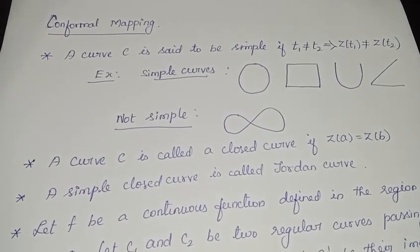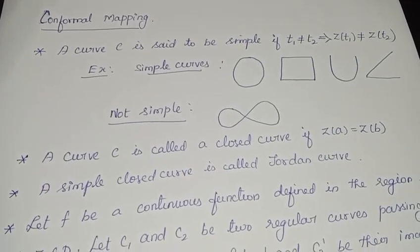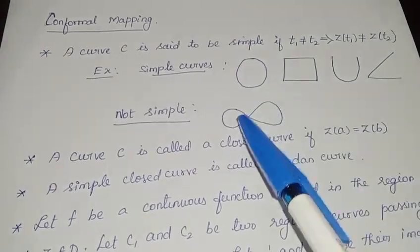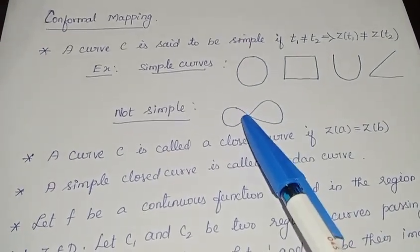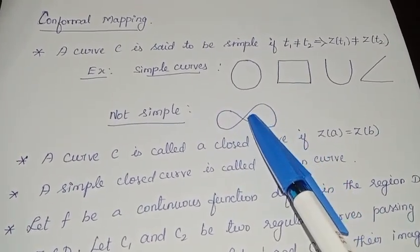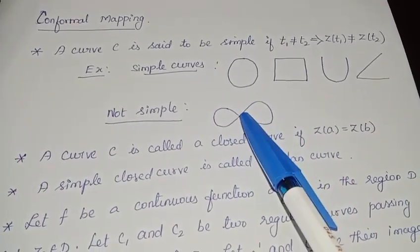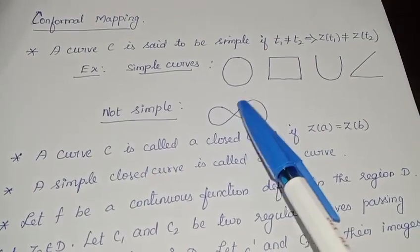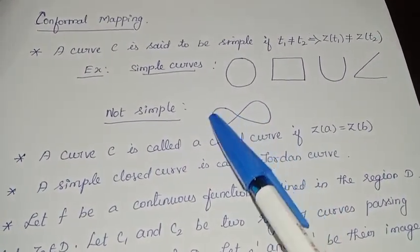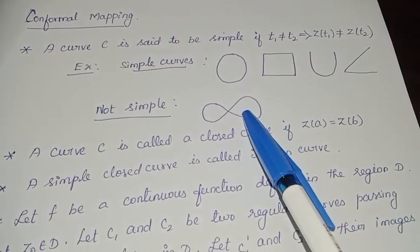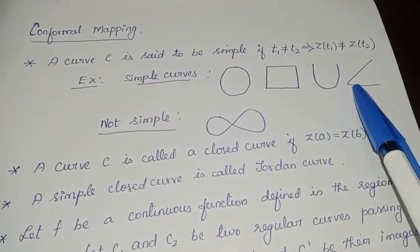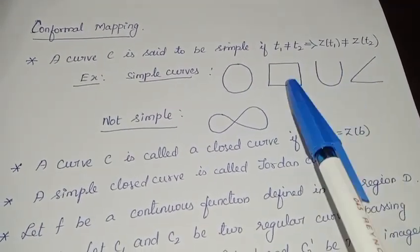A curve is said to be simple if it does not have any intersections. Look at this curve — if the given curve does not have any intersections like this, it is called a simple curve. Since it is intersecting at this point, this is not simple. Whereas these curves here are simple curves.